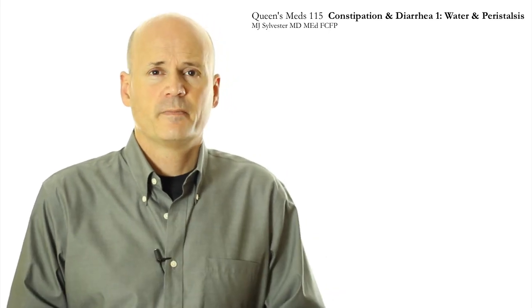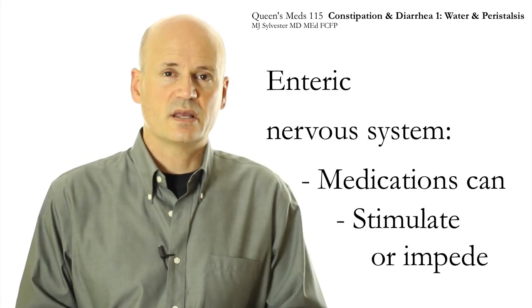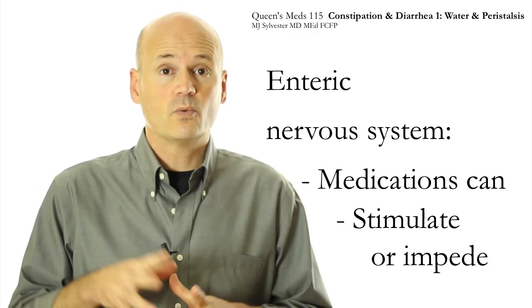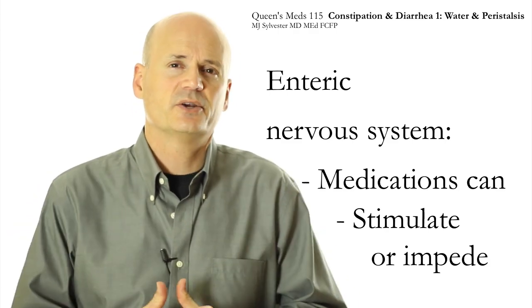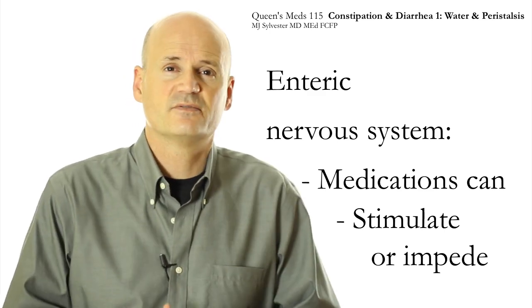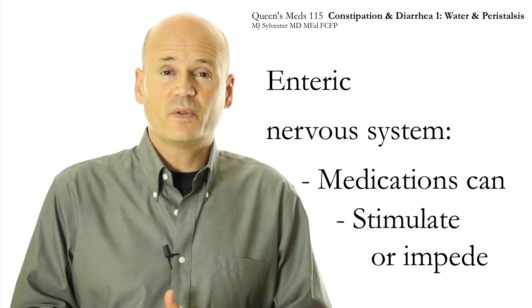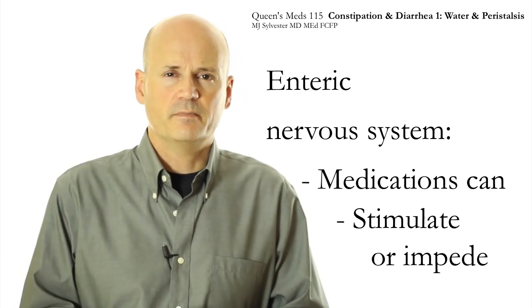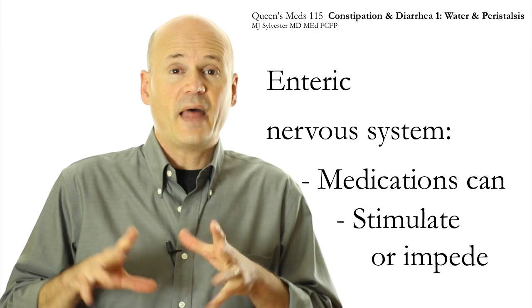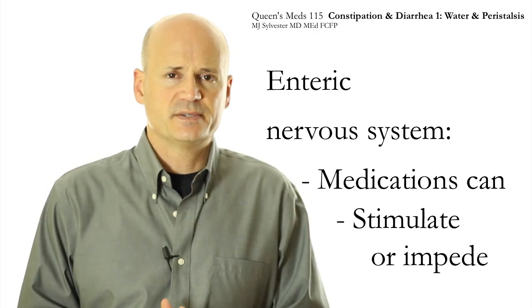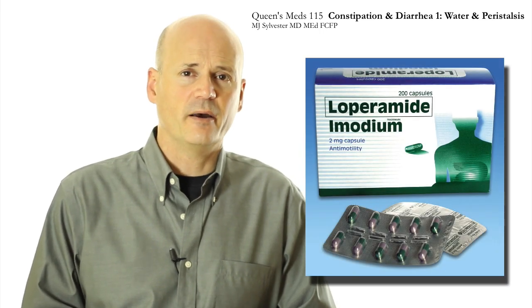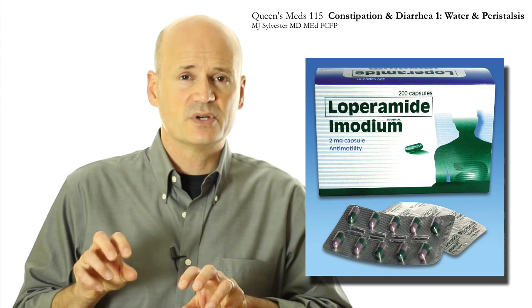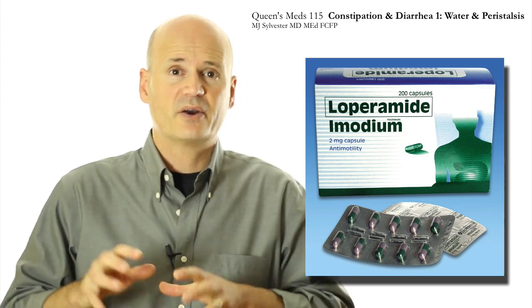Drugs can also affect your enteric nervous system. Caffeine is one you're probably already familiar with — it increases peristalsis through its effect on the enteric nervous system. Opiates are another class: there are opiate receptors in your enteric nervous system, so codeine or morphine will slow down peristalsis. We take advantage of this with loperamide, used to treat diarrhea — it attaches to the same receptors as opiates and slows down peristalsis.